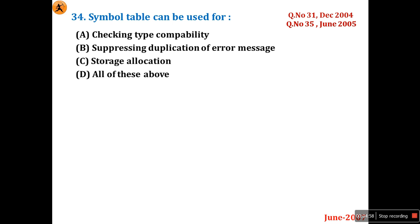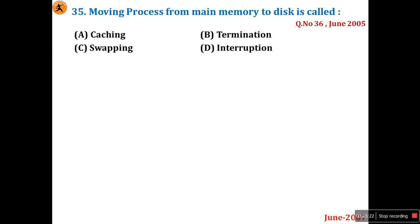A symbol table can be used for checking type compatibility, suppressing duplication of error messages, and storage allocation — all of these. Option D, 'all of the above,' is the right answer. This has been explained in detail in question 31 of December 2004 and question 35 of June 2005.